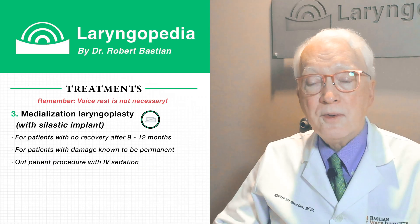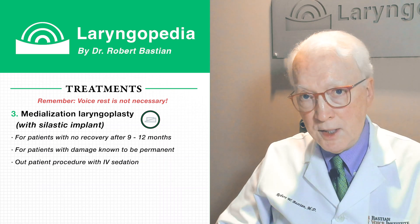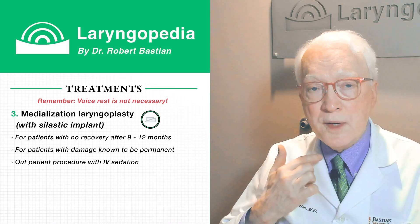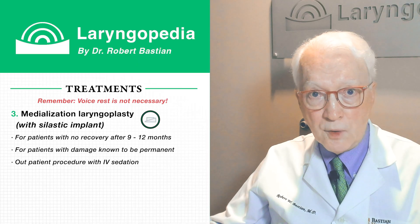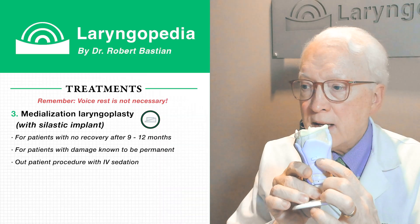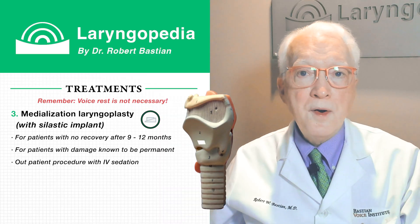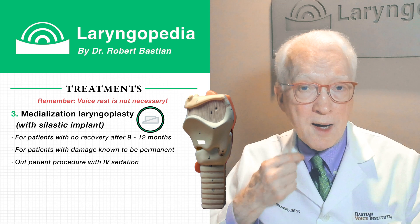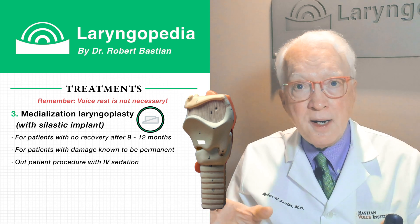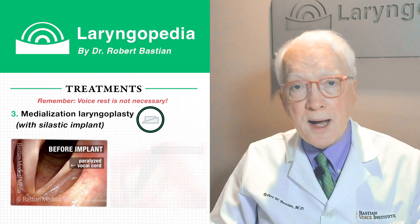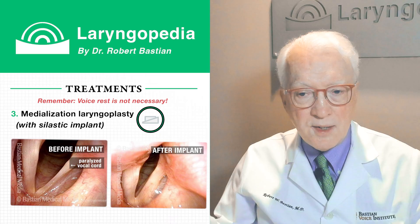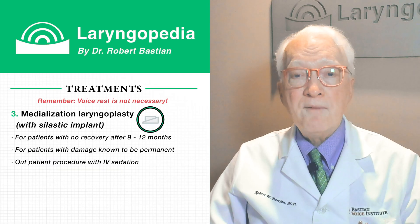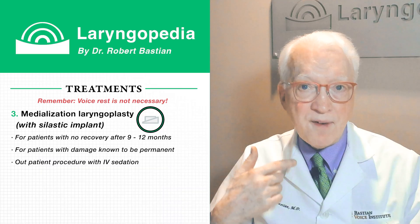The procedure is done under deep IV sedation — like you'd have for a colonoscopy — so you're off in space. We use numbing medicine and make a little one-inch incision on the front of the neck. Through that incision we go down to the voice box and make a little window in it — you can see it here on this model, that little rectangle. A silastic implant — like a wedge door stopper — is squeezed through that window, snaps open, and into position permanently. At the end of the procedure we rouse you just enough to say 'E' to fine-tune the placement. Most people don't remember anything.